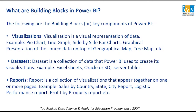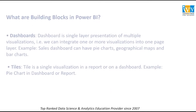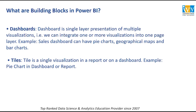Reports are collections of different visuals that appear together on one or more pages — like a sales report showing sales by country, state, or city, logistic performance reports, profit reports, or product reports. A Dashboard is a single-layer presentation of multiple visualizations, where you can integrate one or more visualizations into one page. For example, a sales dashboard can have three different report pages showing three different types of reports in one dashboard.